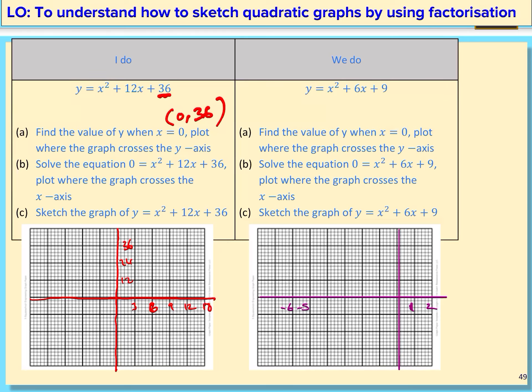We need to find two positive factors of 36 that when they add together give 12. Let's think about that. 12 and 3 are factors of 36, but they add up to 15. There's also 9 and 4, but that adds up to 13. There is also 6 and 6, and that does add up to 12.